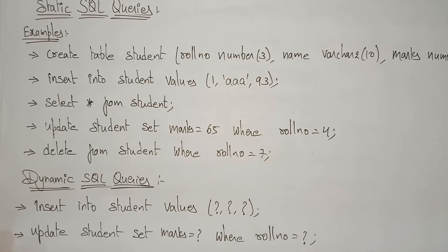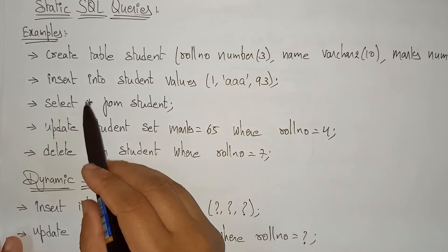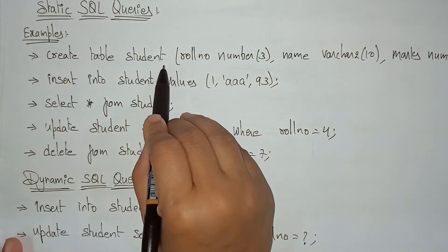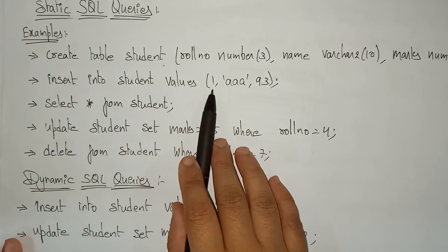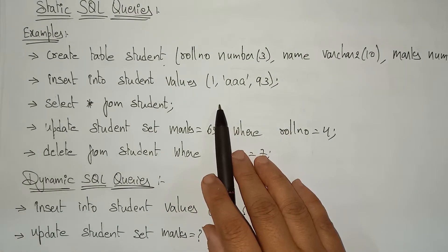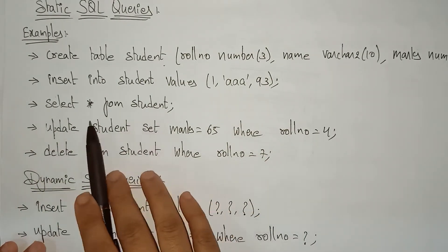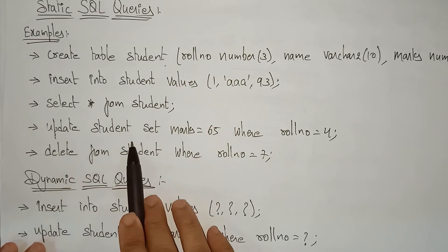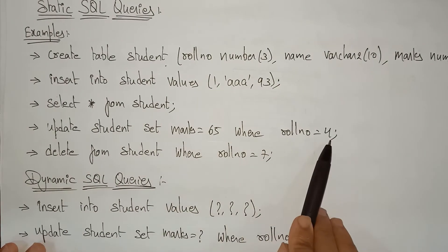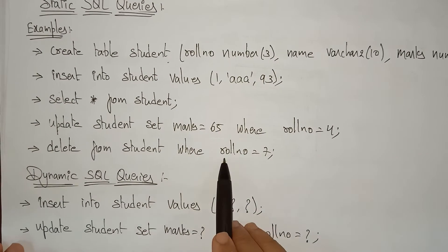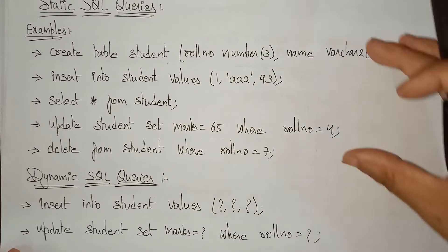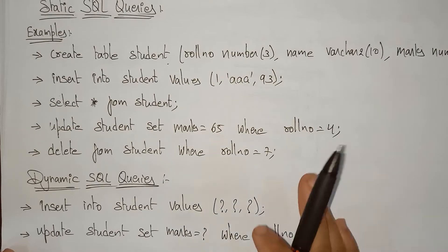Hi students, welcome back. So far you have studied about static SQL queries and running them using JDBC programs. You have seen how to create a student table using a JDBC program, how to insert data into a table — single insertion and multiple insertions — how to retrieve data from the database using the select command, update the student table, and delete rows from the table using some constraint. These are all static values.